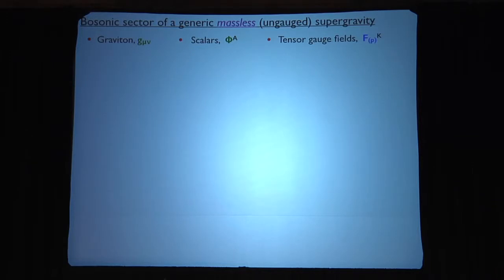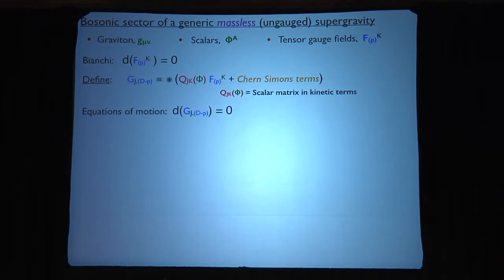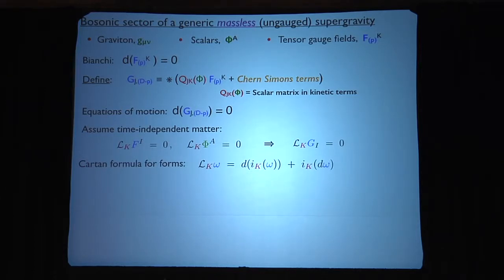And so, just think of any generic supergravity, the results can be pretty much the same, un-gaged and massless. There's a graviton, some tensor gauge fields, some scalars, and basically, the tensor gauge fields satisfy Bianchi identity. You have to define a dual, such that essentially you fold in all the scalars and all the Chern-Simons terms so that the dual has the property that its closure is the equations of motion of the field you first thought of. So you've got f and its dual, both of which are closed. You assume time independence, so the Lie derivative of everything in sight vanishes.